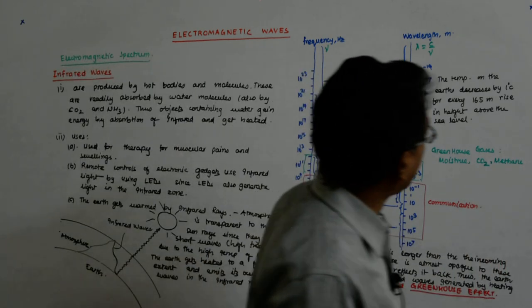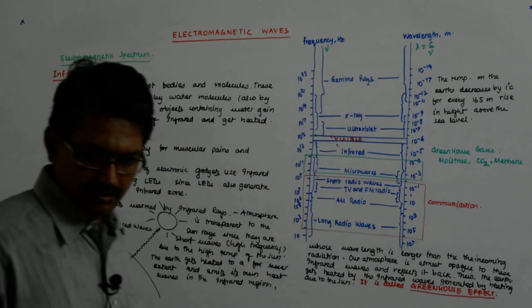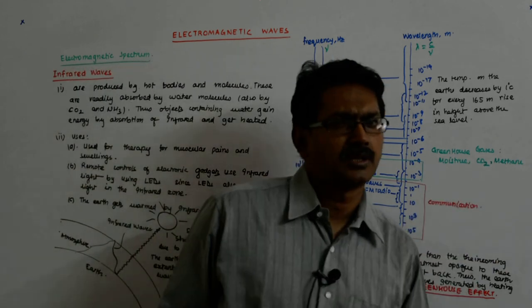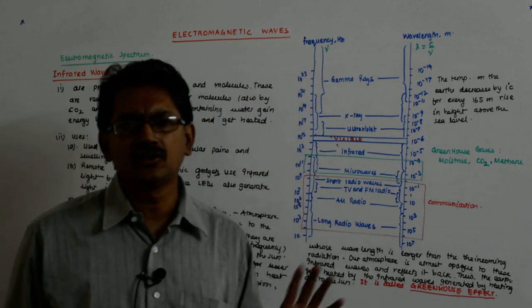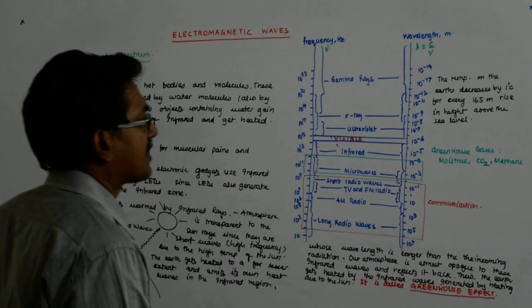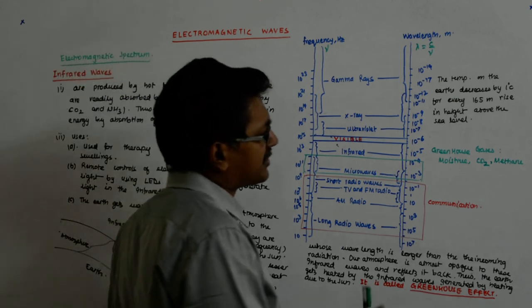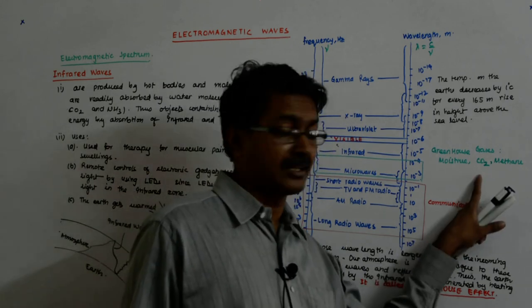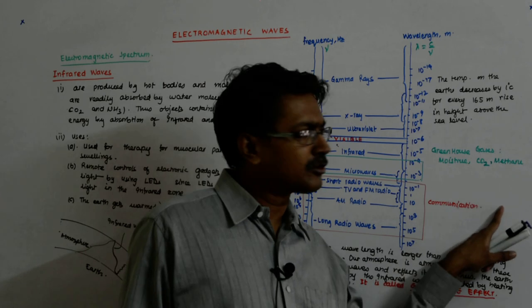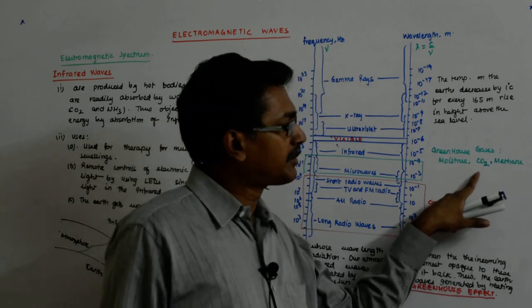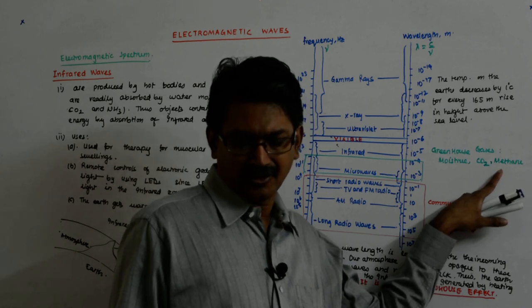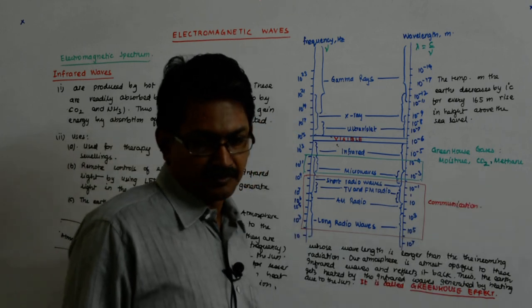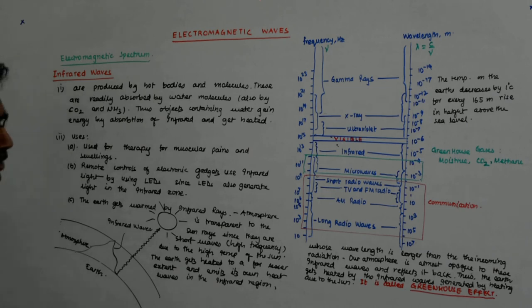CO is a greenhouse gas but not that powerful and not generated in huge amounts like CO2. Developing countries point fingers at developed countries generating a lot of CO2. Methane is generated by standing crops, so developed countries point to crops adding to the greenhouse effect. And in this blame game, common people suffer.